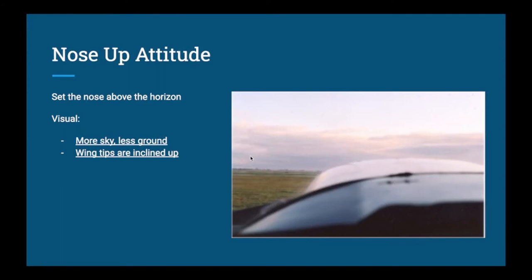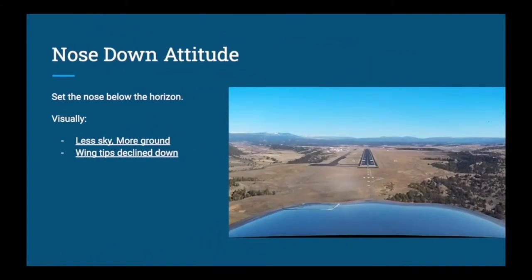In a nose-up attitude, the nose is well above the horizon — you'll see a lot more sky and less ground, and your wingtips will be on an upward incline. Nose-up attitudes are very common during takeoff or any time the airplane is climbing. In a nose-down attitude, the nose is well below the horizon — you see more ground, less sky, and the wingtips are on a decline down toward the horizon. A nose-down attitude is common on approach to land or anytime the aircraft is in a descent.